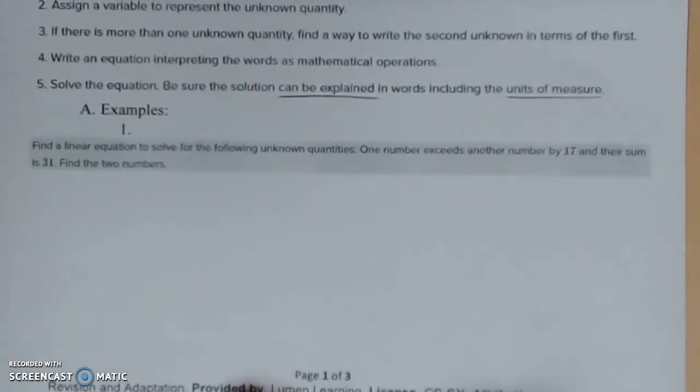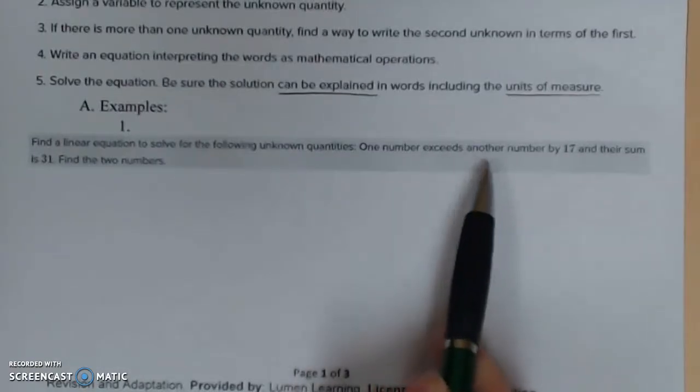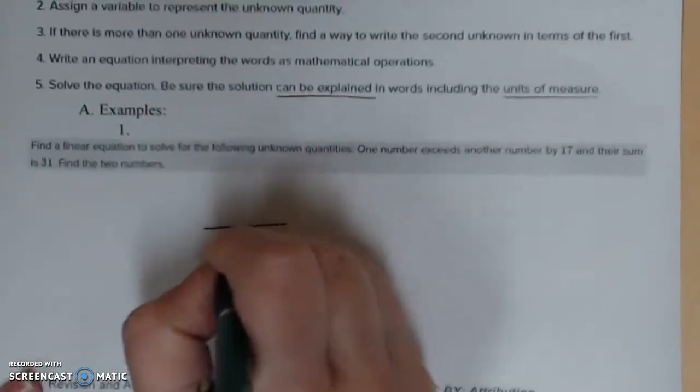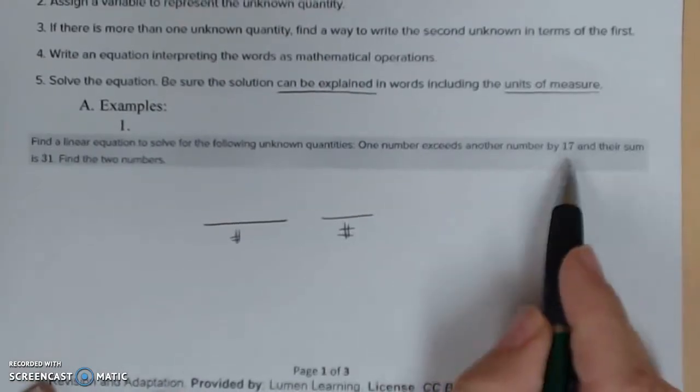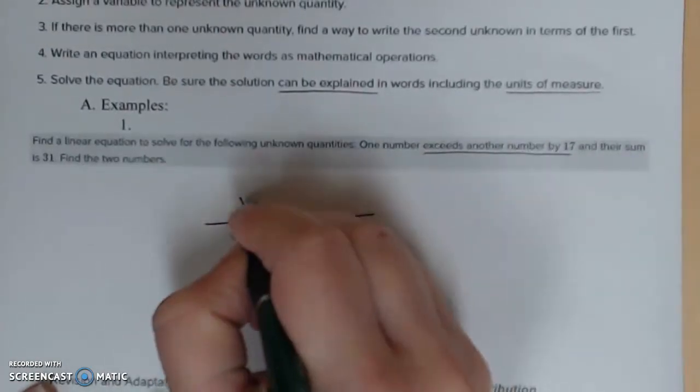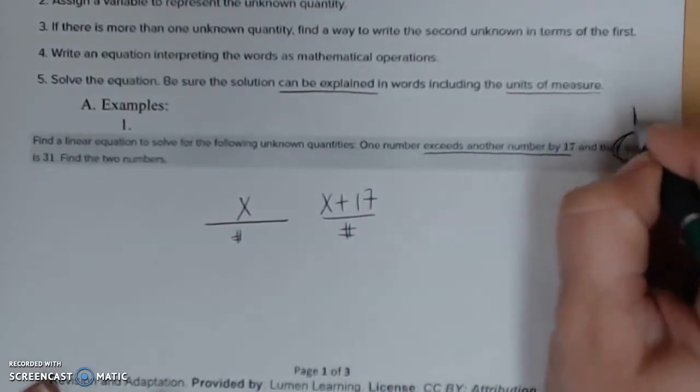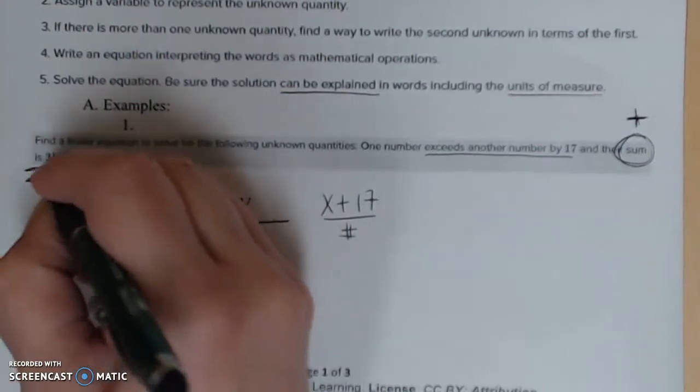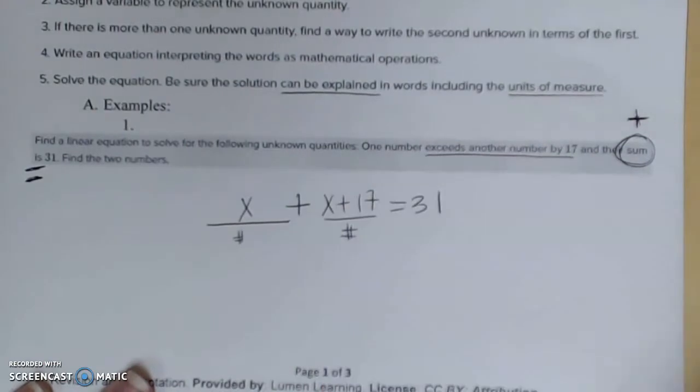This first example says find a linear equation to solve for the following unknown quantities. One number exceeds another, so here's my first number, here's my second number, by 17, exceeds by 17. Let's call the first one x. That means the next one is going to be plus 17 to get to it. And their sum, sum meaning addition, is there's your equal sign 31. Find the two numbers. So it's saying if I sum these up it should give me 31. Take it slow.